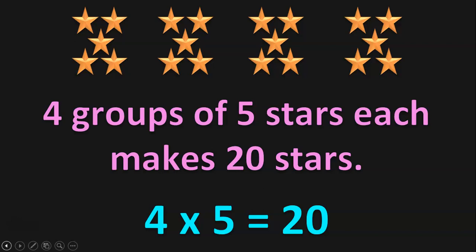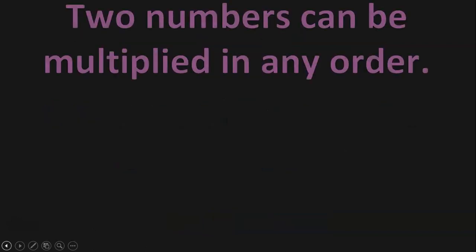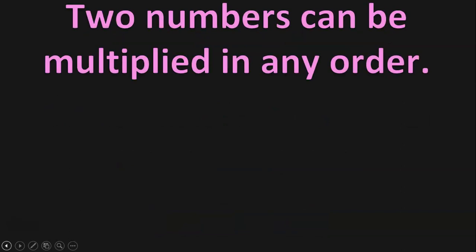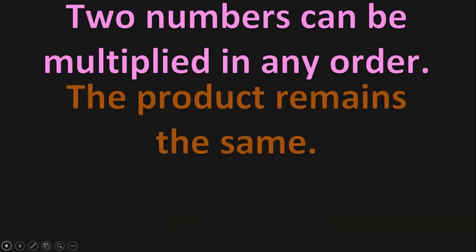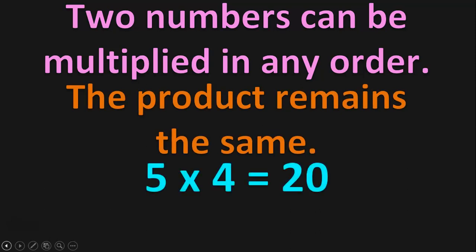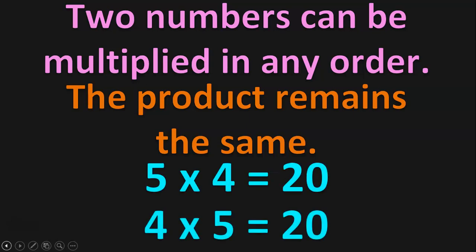Where 4 means the number of groups and 5 means the number of stars in each group. The multiplication statement is 4 into 5 is equal to 20. This satisfies the statement: two numbers can be multiplied in any order, the product remains the same. 5 into 4 is equal to 20 and 4 into 5 is equal to 20. So understanding this in a simpler way — 5 and 4 are two different numbers. When you multiply them in any order, 5 into 4 or 4 into 5, you get the same product 20.